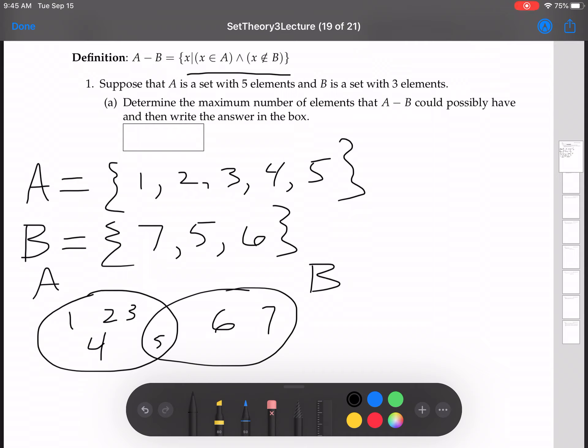Okay, now let's see. Now A minus B has the numbers 1, 2, 3, 4 in it, and the cardinality of A minus B, the number of elements of A minus B, now becomes 4.